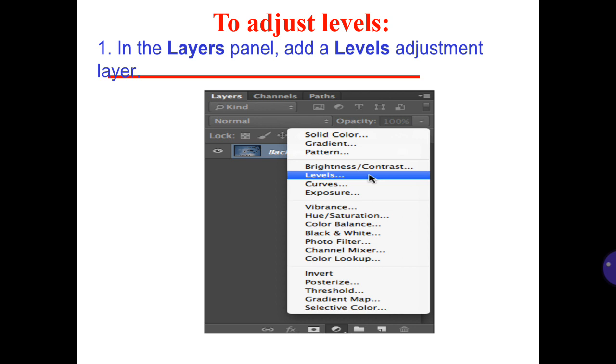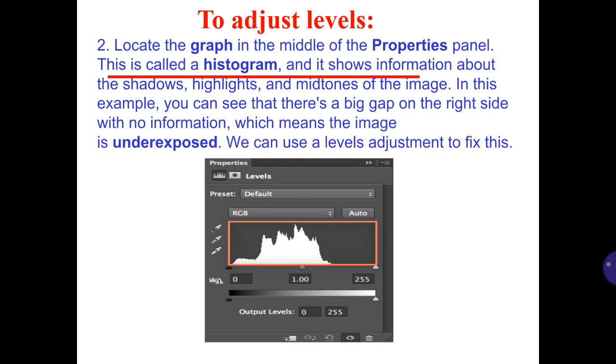To adjust levels: 1. In the layers panel, add a levels adjustment layer. 2. Locate the graph in the middle of the properties panel. This is called a histogram and it shows information about the shadows, highlights, and midtones of the image. In this example, you can see that there is a big gap on the right side with no information, which means the image is underexposed. You can use a levels adjustment to fix this.